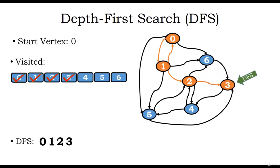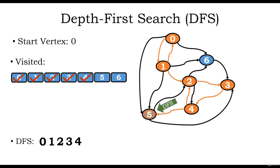From vertex 3 we move on to vertex 4, which is not yet visited, so we visit vertex 4 and mark it as visited. From vertex 4 we can visit vertex 2, but vertex 2 is already visited. Through the next edge we can visit vertex 5, which is not yet visited, so we visit vertex 5 and mark it as visited. From vertex 5 we can visit vertex 2, which is already visited, and vertex 3, which is also already visited. There are no other edges from vertex 5.